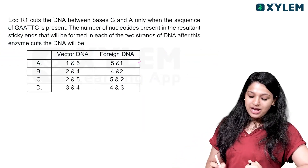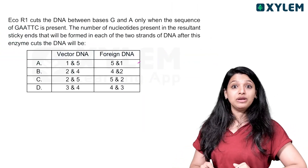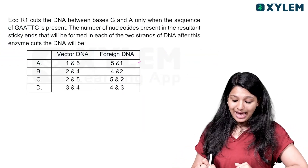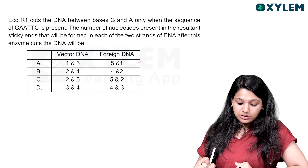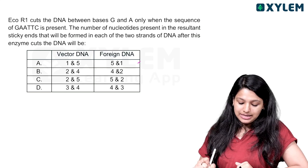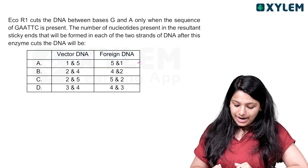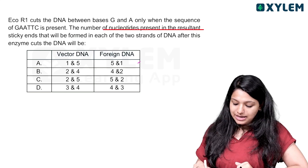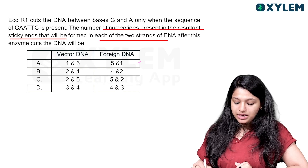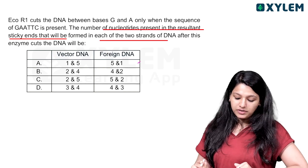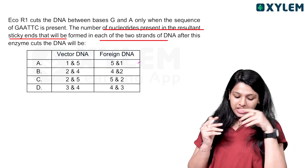Let's go to Question R1. It cuts the DNA between bases G and A, only when the sequence GAATTC is present. What is the number of nucleotides present in the resultant sticky ends that will be formed in each of the two strands of DNA after this enzyme cuts the DNA?